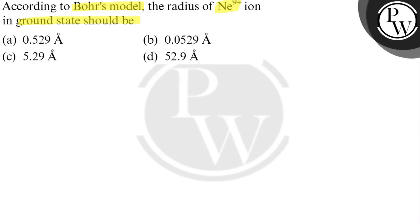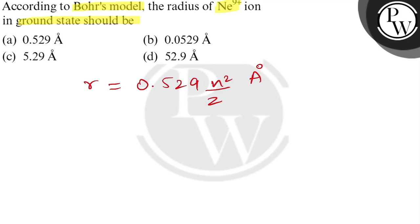According to Bohr's model, radius is given as 0.529 × n²/Z angstrom, where n is the orbit for which we are calculating the radius, and Z is the atomic number of the atom. The question asks for Ne⁹⁺.